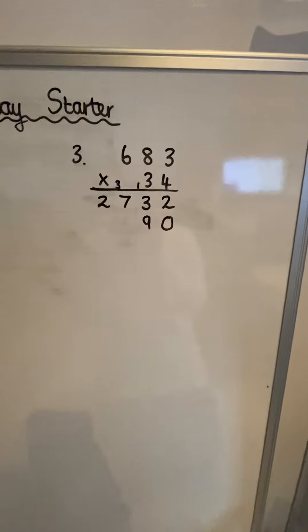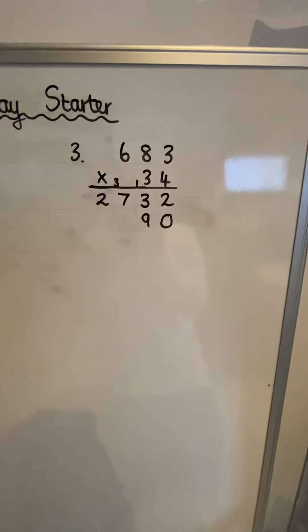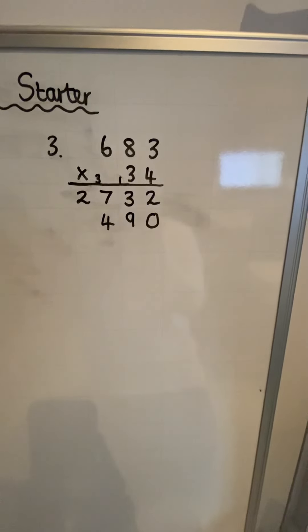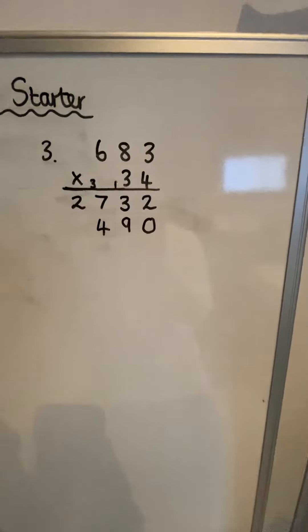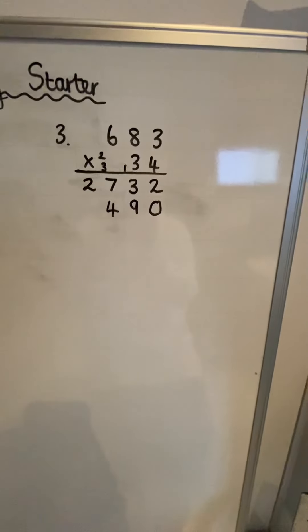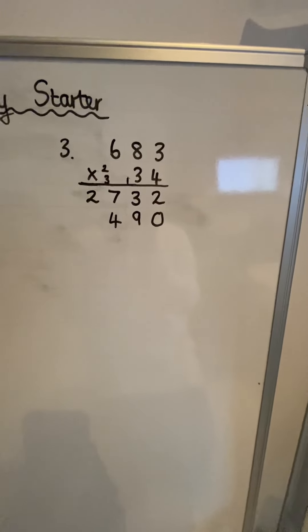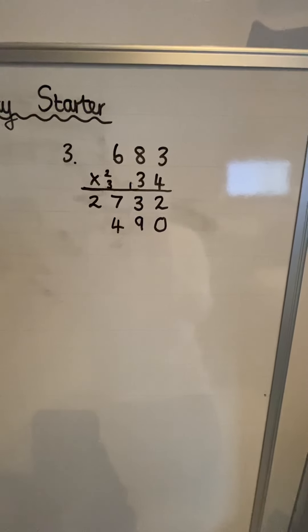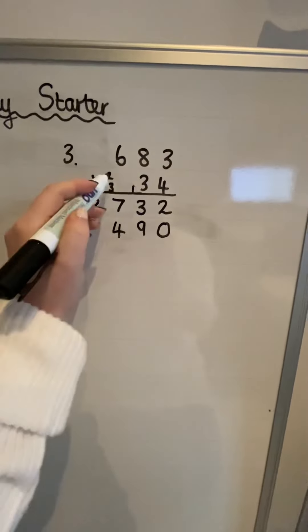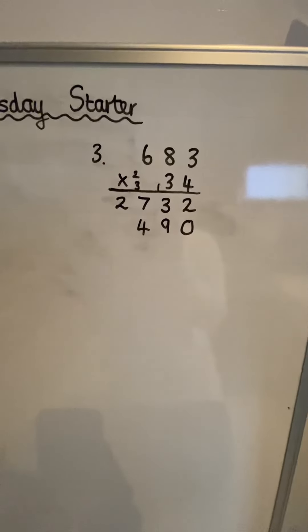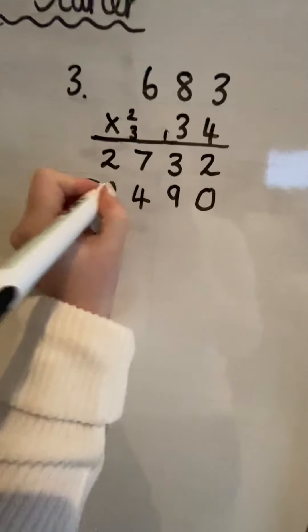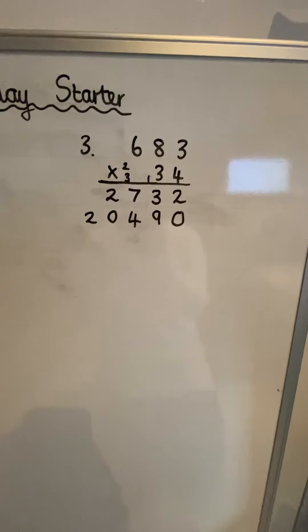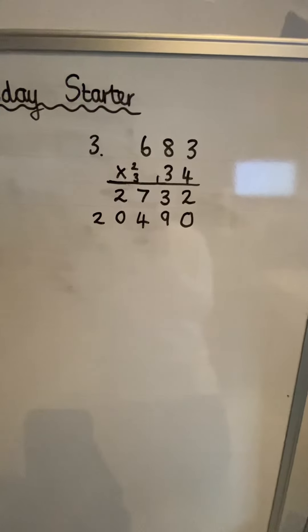Now I need to do three times eight, which gives me 24, so I put the four in here and carry the two. Then I need to do six times three, which gives me 18, but I've got that carried two to add on, so that gives me 20. I fill that in and write 20, completing the second partial product.